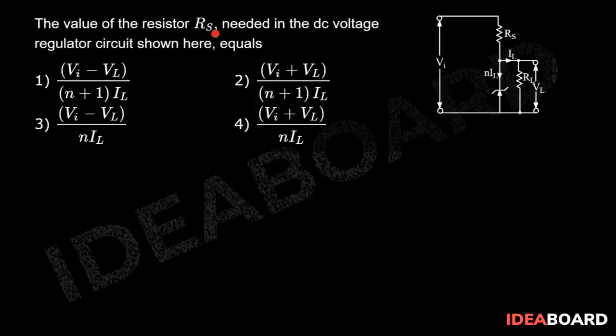The value of the resistor RS needed in the DC voltage regulator circuit shown here equals: If we analyze the circuit,